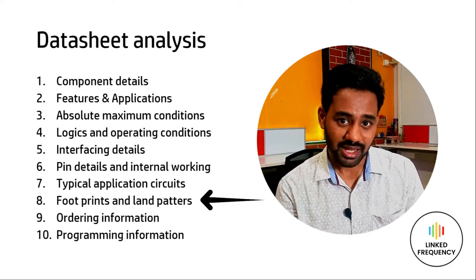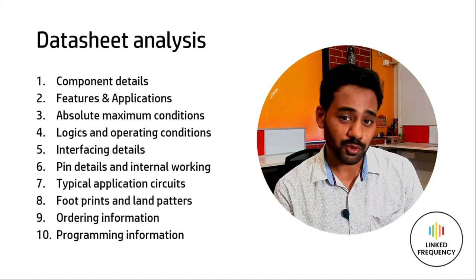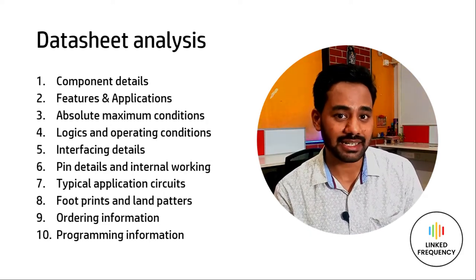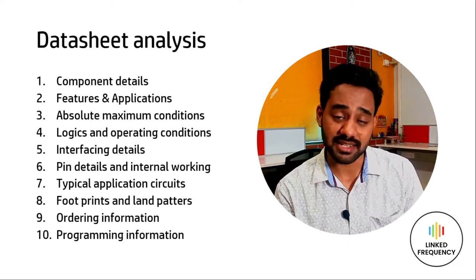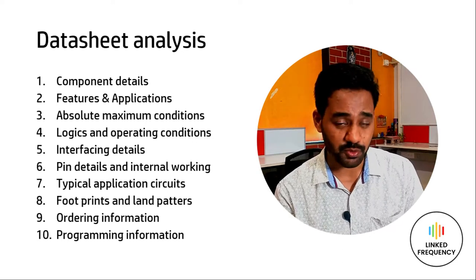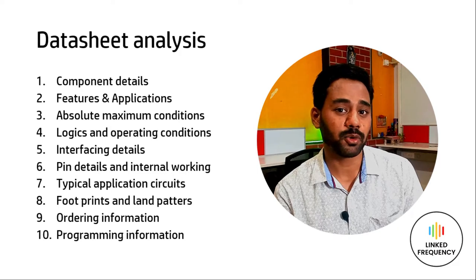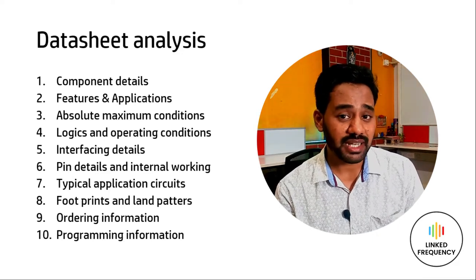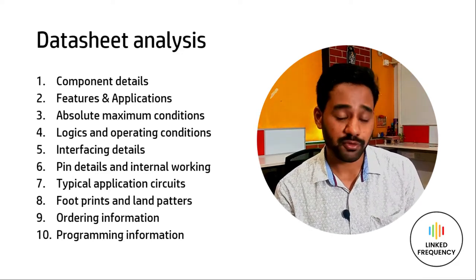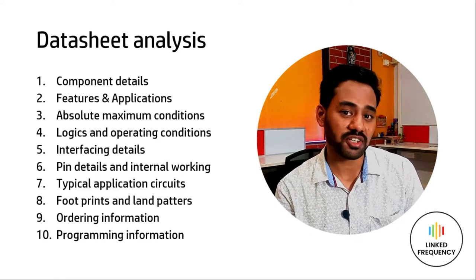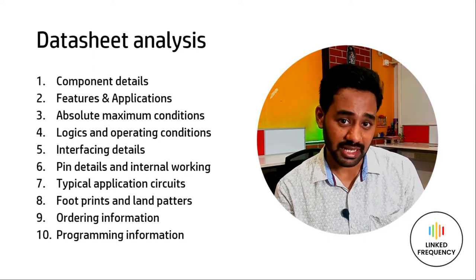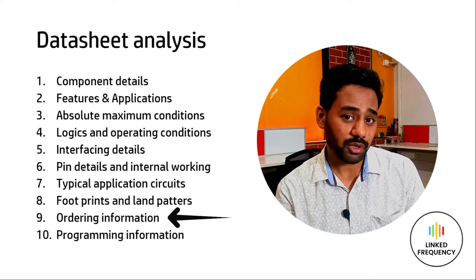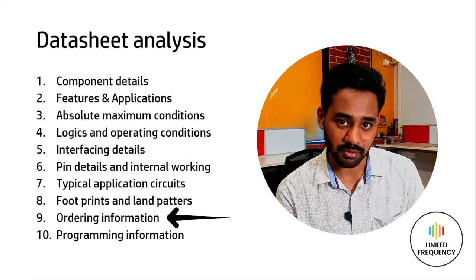The eighth parameter is footprints and land patterns. When designing a PCB, you need a footprint, and you must refer to the datasheet's mechanical data section. Land patterns are essential for stencil manufacturers used in pick-and-place assembly lines where components are placed on the PCB automatically by robotic arms. Choosing the wrong footprint will cause your entire production to go wrong, so you must be very careful with the information given in the datasheet.